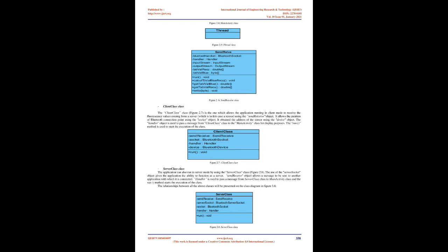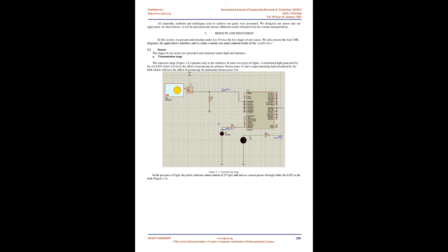We distinguish two use cases: evaluate health and send message, because after having obtained the result concerning the state of health of his plant, the Main Actor can decide to send a message to request an intervention. Five internal cases — activate Bluetooth, select address, enter duration, choose type of evaluation, and fluorescence values — are linked to the evaluate health case by an inclusion relationship, because when the evaluate health case is requested these five internal cases must be requested. The send message case is linked to the enter message case by an inclusion relation and to the read message case by an extension relation, because the execution of the send message case can optionally cause the execution of the read message case.